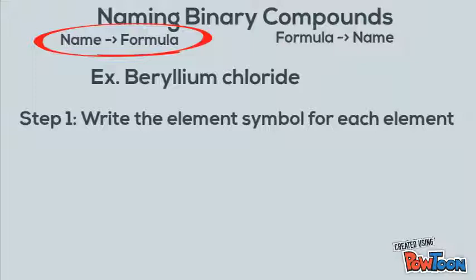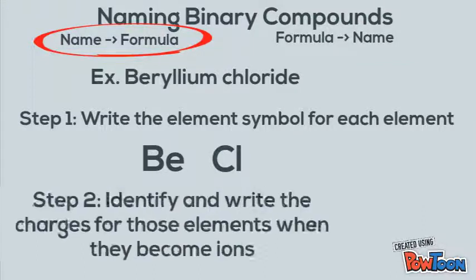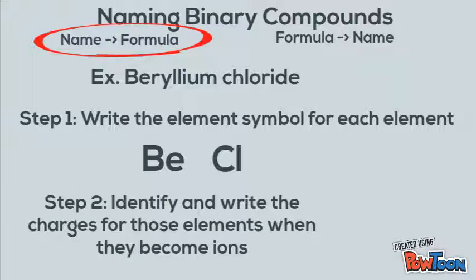Step number one is to write the element symbol for each element. We're going to look on the periodic table for beryllium and chlorine — they are Be and Cl. Step number two is to identify and write the charges for those elements when they become ions. Being able to identify charges is super important. Beryllium has a plus two charge and chlorine has a minus one charge. Write those charges at the top right.